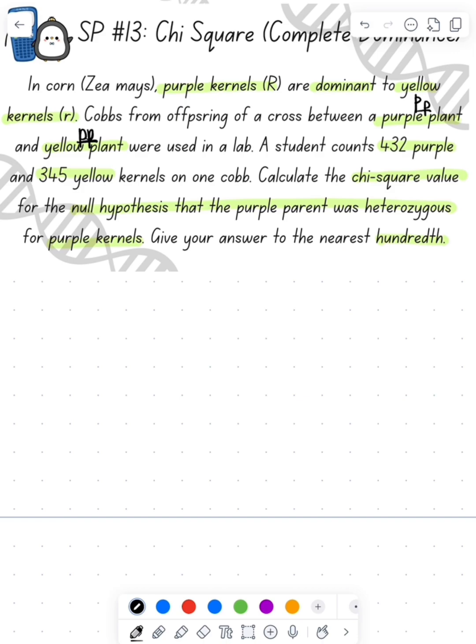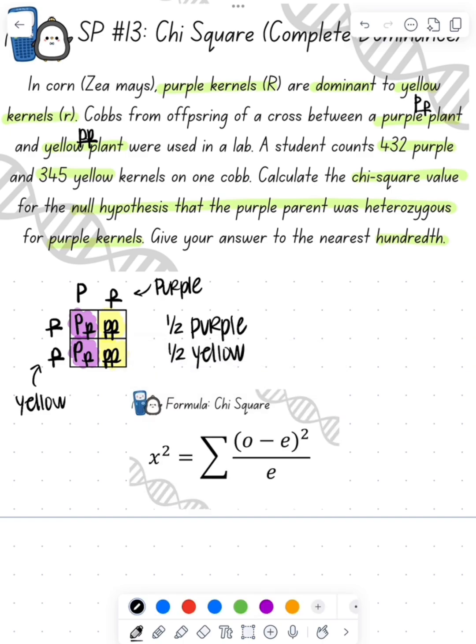First thing we're going to do is figure out what is our expected. So we're going to do a Punnett square to see what we expect for the ratio of the offspring if the parents are heterozygous for purple and homozygous recessive for yellow. We see that we get one half being purple and one half being yellow. We're going to use this to find our expected later.